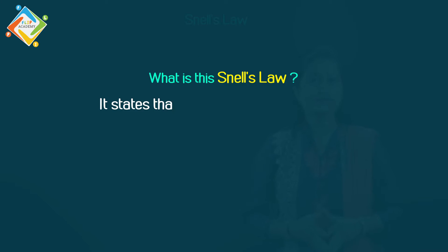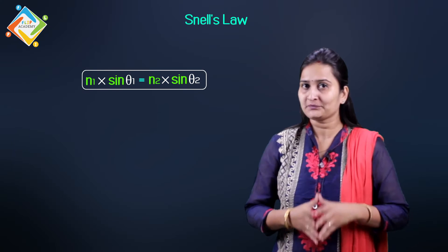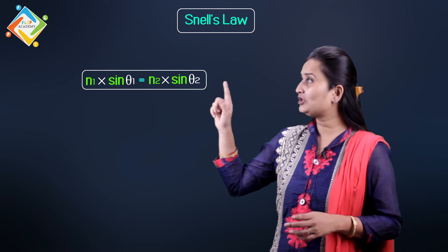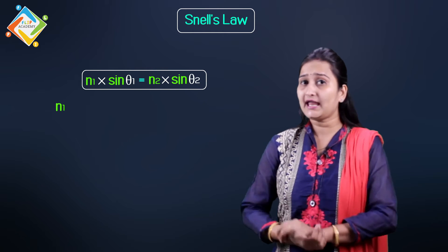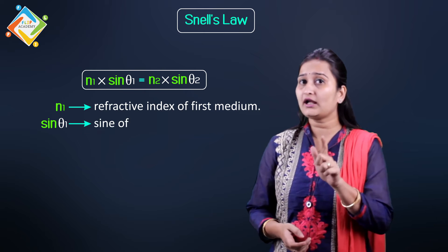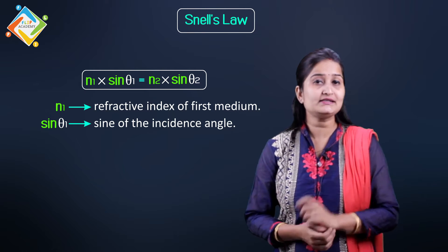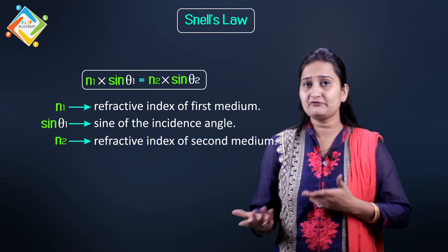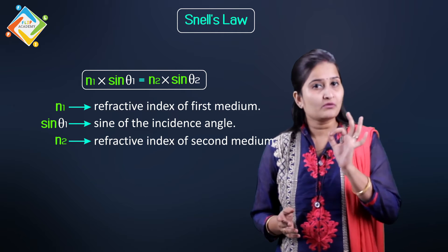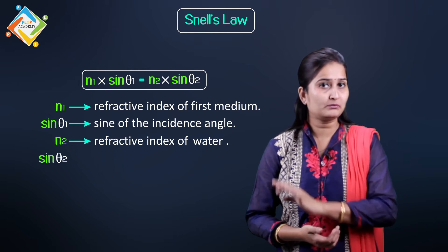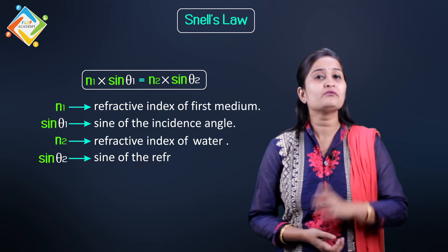Now, what is this Snell's law? It states that the sine of angle of incidence and sine of angle of refraction. It is related by a very simple equation. Look at the equation here. This is called Snell's law. According to this equation, n1 sin θ1 is equals to n2 sin θ2. Where n1 is the refractive index of the first medium. Sine θ1 is the sine of the incidence angle. That is θ1 is your incident angle. Likewise, n2. n2 is nothing but the refractive index in the second medium. Like for example, as we have considered in our example. That is water. Now, n2 is the refractive index of let's say water. That is the sine of the angle of refraction.